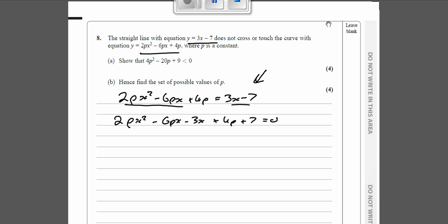So what we've got here is we've got something which looks like a quadratic, so 2px² plus, in brackets, minus 6p minus 3, if you factorize out the x there, plus 4p + 7 equals 0.